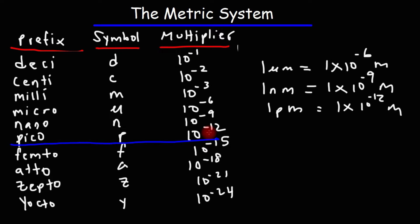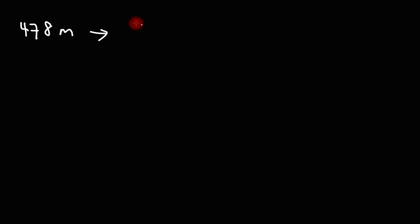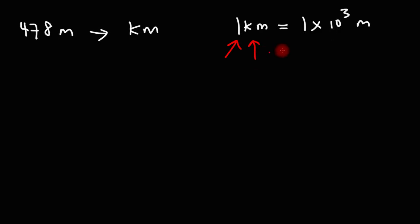Now let's talk about how we can convert from one unit to another. Let's say we have 478 meters and we wish to convert it to kilometers. This is a one-step conversion problem, so we just need the conversion factor between kilometers and meters. We know kilo represents 10 to the third, or 1,000. So we can write the conversion factor: 1 kilometer is 1 times 10 to the third meters. Step one: write a 1, write the prefix with the base unit, write the multiplier, and then the base unit without the prefix.